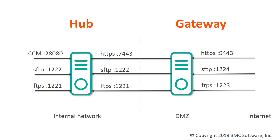Control-M Managed File Transfer Enterprise has a Hub component and a Gateway component. The Gateway typically runs in a DMZ and accepts incoming traffic from external users coming from the internet. The MFT Gateway listens on FTPS and HTTPS ports and uses a default certificate that was generated at installation time.